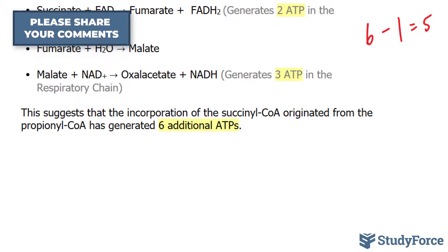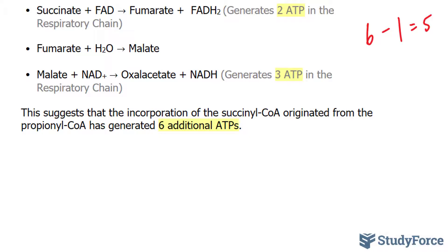This suggests that the incorporation of succinyl-CoA originated from the propionyl-CoA generates six minus one, that's five. I'll take 117 ATP, which is what I found earlier, and add five to that.